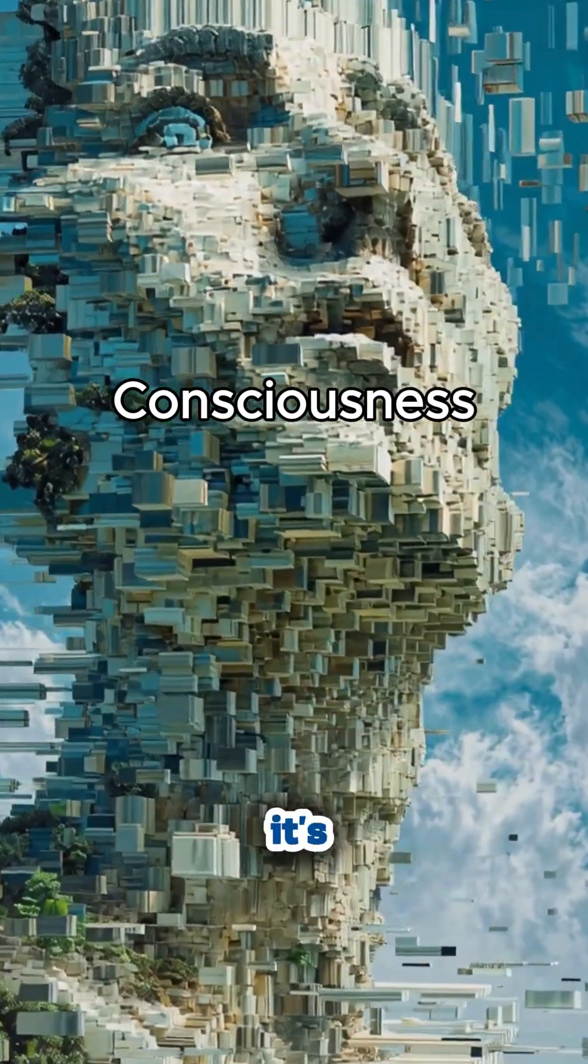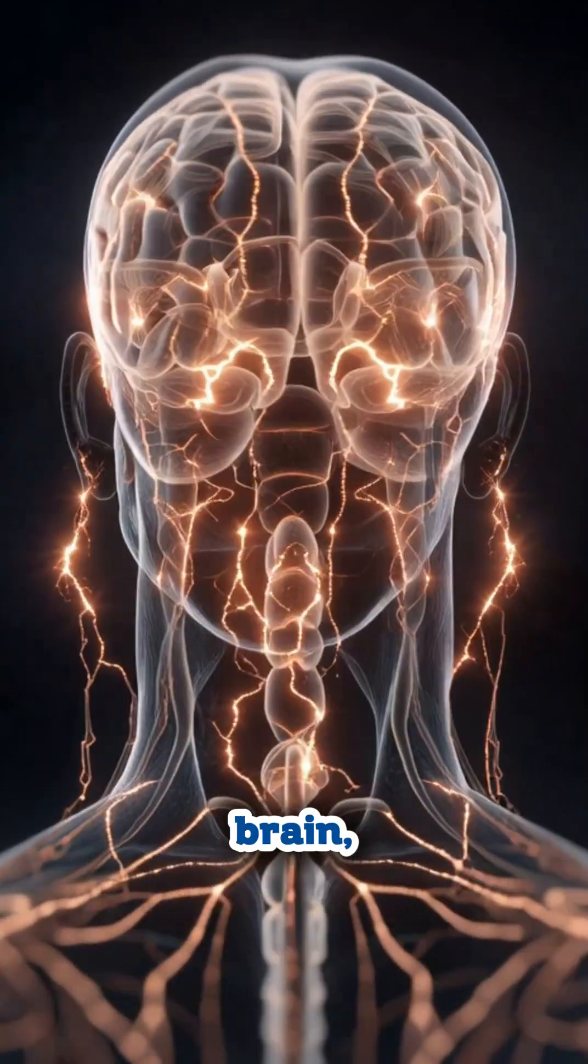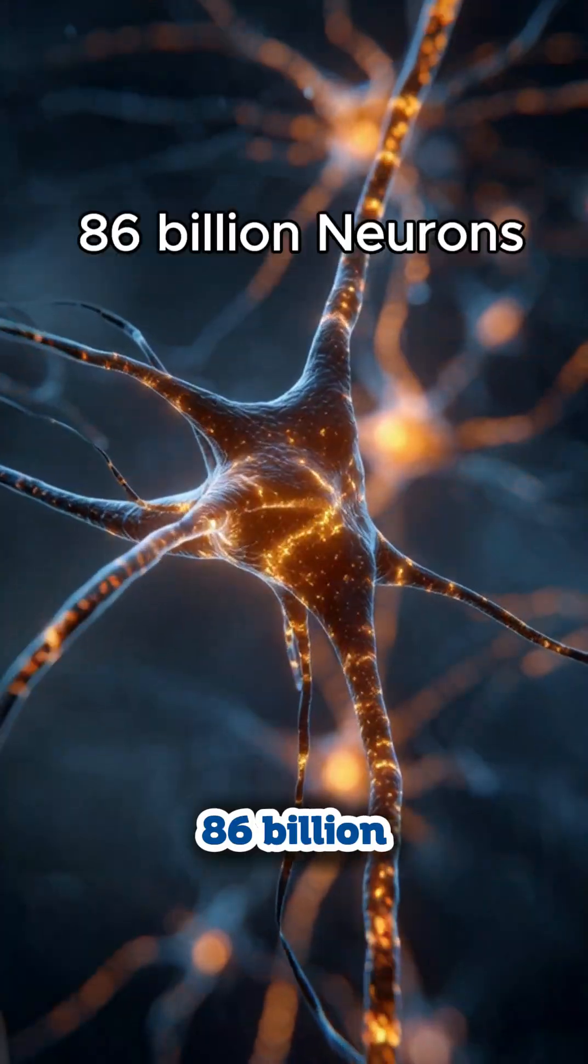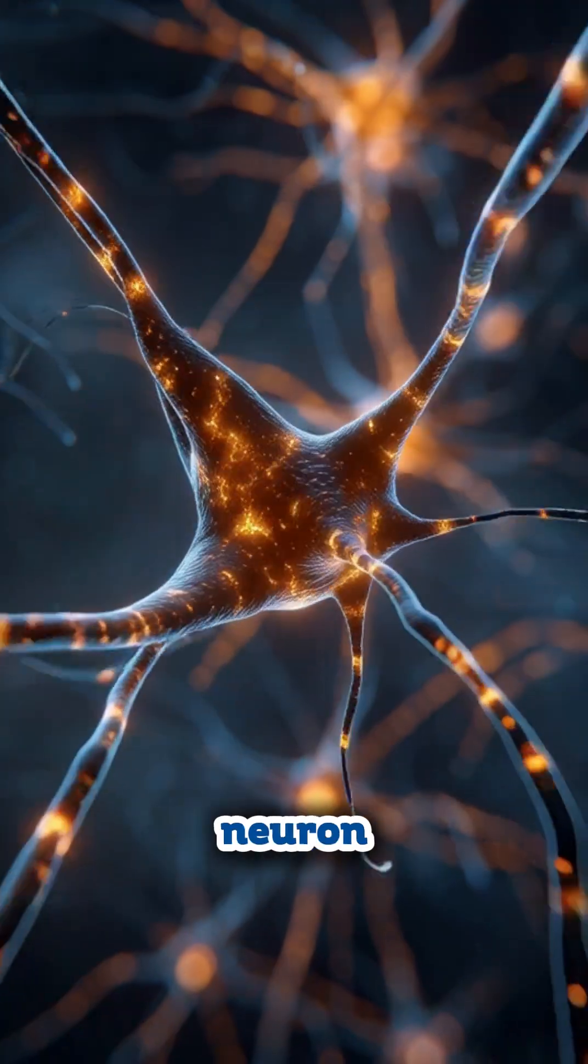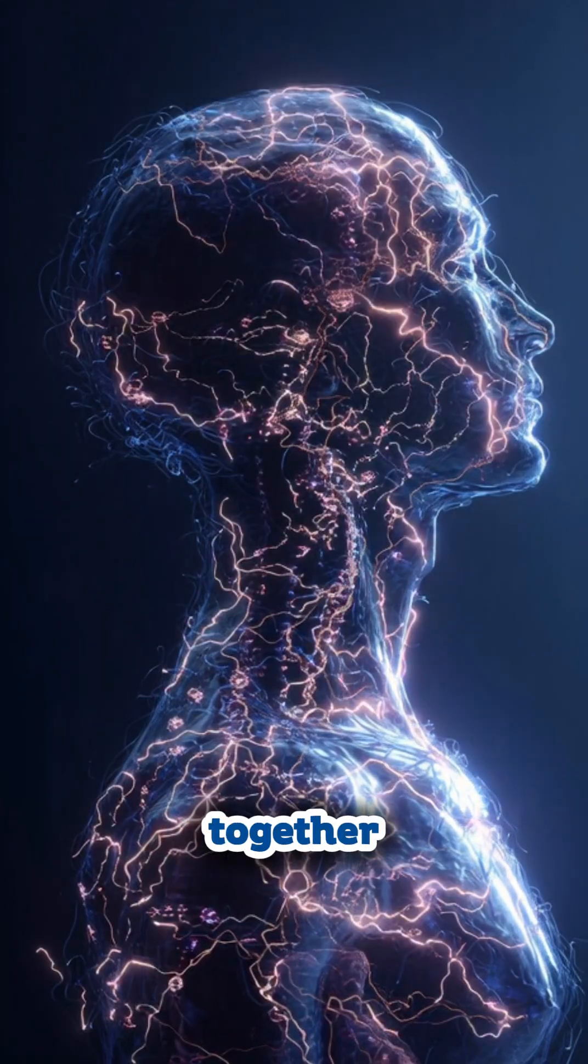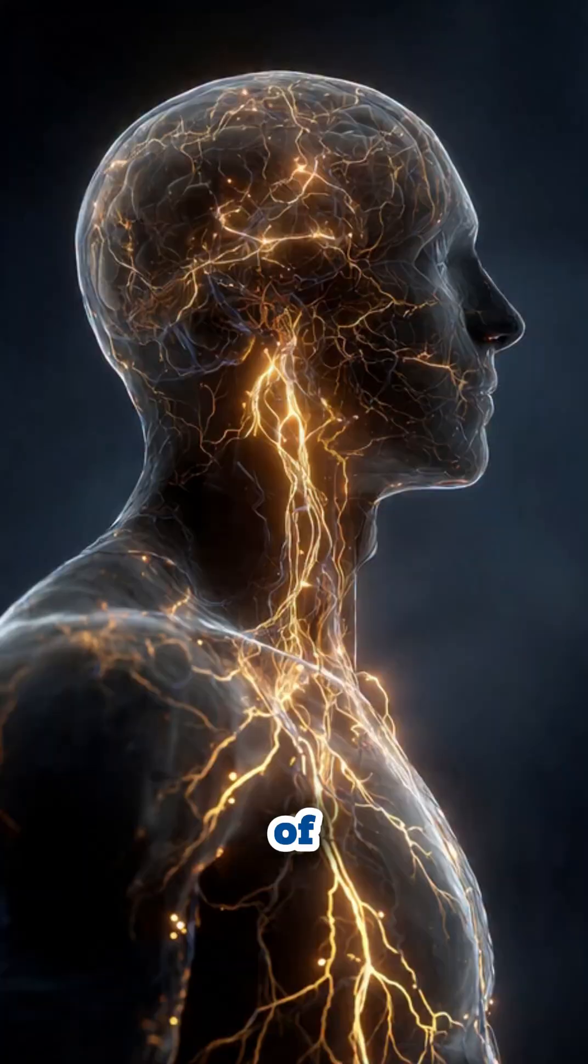It's not just thinking, it's knowing that you're thinking. Inside your brain, nearly 86 billion neurons are firing electrical signals. Each neuron is simple, but together, they create something strange. A unified sense of self.